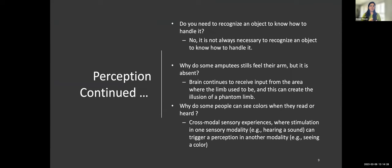This chapter answers key questions about perception. First, do you need to recognize an object to know how to handle it? The answer is no — if handed an unfamiliar object with eyes closed, you can still use touch to determine its shape, weight, or texture. Second, why do some amputees still feel their missing arm? This phenomenon arises because after amputation, the brain continues to receive input from the area where the limb used to be, creating an illusion that the limb is still present.